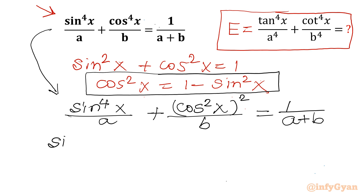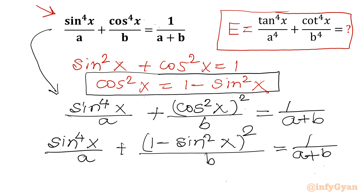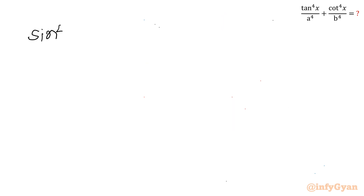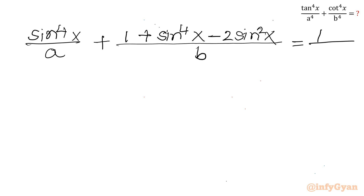Applying the substitution, we get: sin⁴x / a + (1 − sin²x)² / b = 1/(a+b). Now let us expand (1 − sin²x)² using the (a−b)² formula. This gives: sin⁴x / a + (1 + sin⁴x − 2sin²x) / b = 1/(a+b).